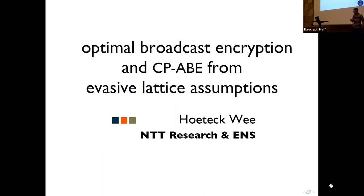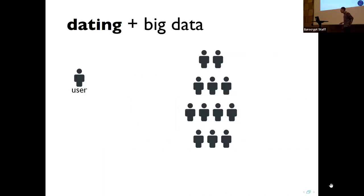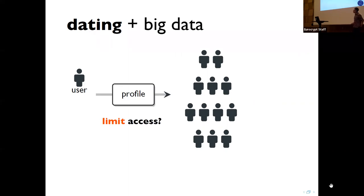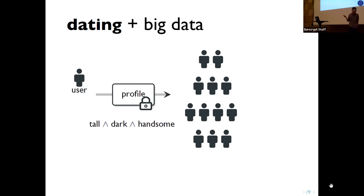I'm going to start my talk with slides from the EuroCrypt 2013 RAM session. Imagine you're interested in online dating. You join the website and the first thing you do is create a profile containing sensitive information about you, like your hobbies. Your first concern about privacy is that you want to limit access to your profile — ideally to people who satisfy your dating criterion, which could be a simple AND or a more sophisticated DNF formula.